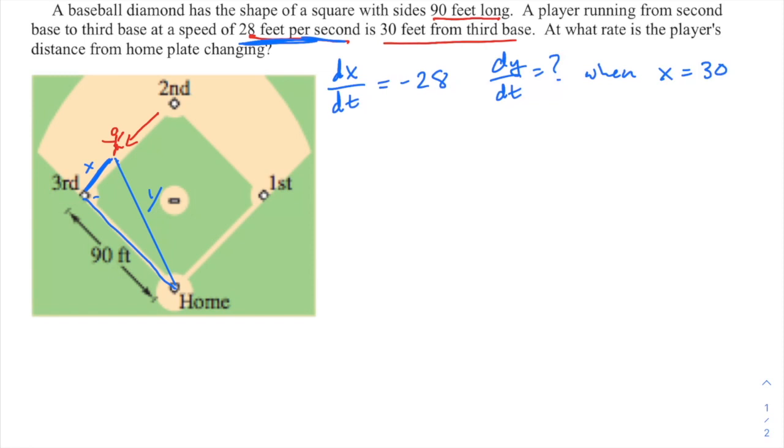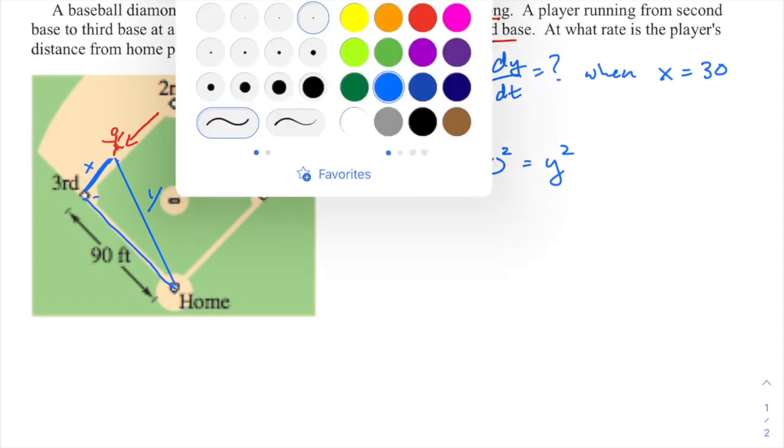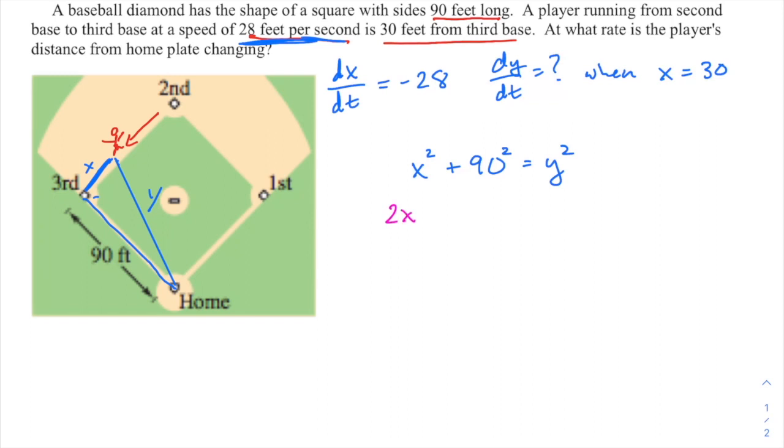Pythagorean theorem looking kind of problem, I think. So x squared plus 90 squared is equal to y squared—that's how these three quantities are always related. And now when I differentiate that with respect to time, I get 2x(dx/dt). The derivative of that constant, that side of 90, is 0—that's not changing—and that equals 2y(dy/dt).